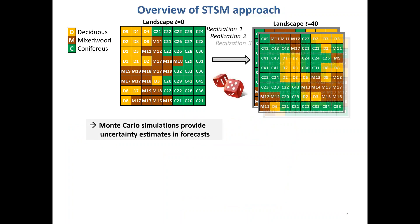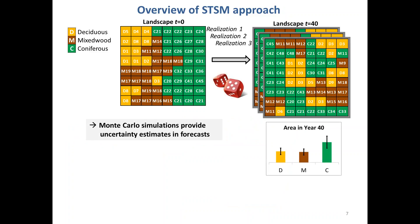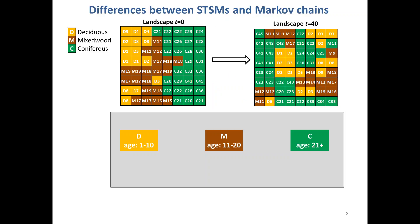If we start all over and repeat this process multiple times, each time we roll the dice we're going to project slightly different future states and ages for each cell. We can use this variation between realizations to estimate not only the mean projected state and age of every cell, but also some measure of the uncertainty around that mean based on the variability we get across our realizations.